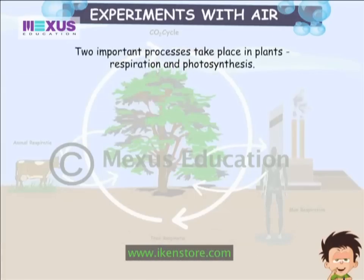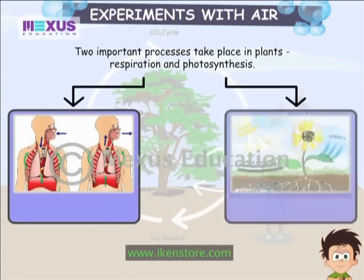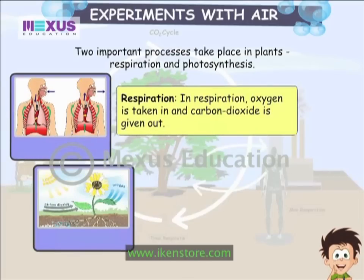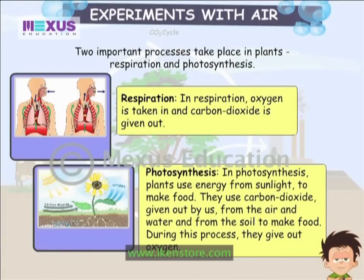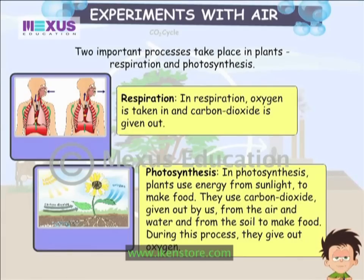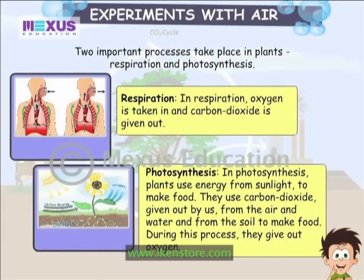Two important processes take place in plants: Respiration and Photosynthesis. In respiration, oxygen is taken in and carbon dioxide is given out. In photosynthesis, plants use energy from sunlight to make food. They use carbon dioxide given out by us from the air, and water from the soil, to make food. During this process they give out oxygen.